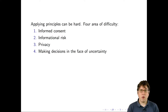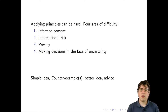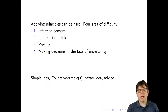There are four main areas: informed consent, informational risk, privacy, and making decisions in the face of uncertainty. As I go through each of these areas, I'll try to give you a simple idea that many people have, then a counter example, then a better idea, and finally some advice.